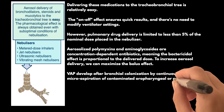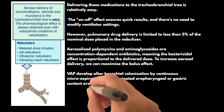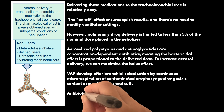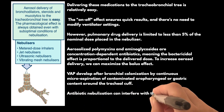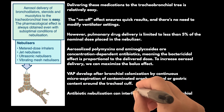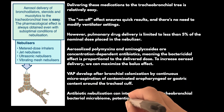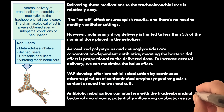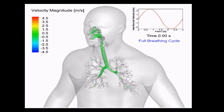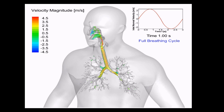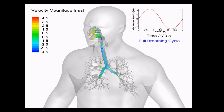Most cases of VAP develop after bronchial colonization by continuous micro-aspiration of contaminated oropharyngeal or gastric content around the tracheal cuff. Antibiotic nebulization can interfere with the tracheobronchial bacterial microbiome, potentially influencing antibiotic resistance and relapse rates. Delivering aerosolized antibiotics for VAP can be difficult because particles need to travel through a complex network of branching air ducts that continuously decrease in size towards the alveolar space. Inspiratory turbulences can cause bronchial deposition, reducing antibiotic delivery to the infected lung parenchyma.